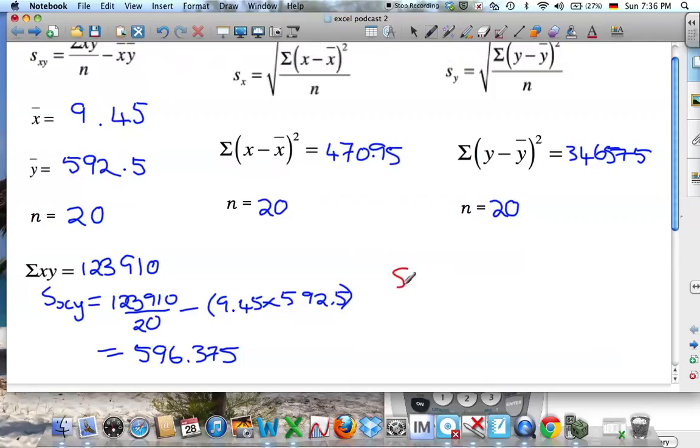So if I say s_x equals, it's the sum of each data point minus the mean squared, which we found out was 470.95, divided by the number of terms, and we take the square root of that.